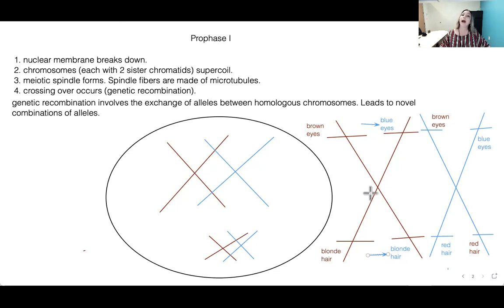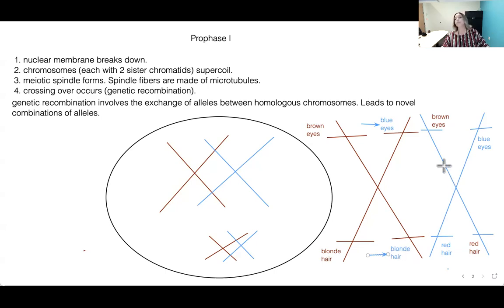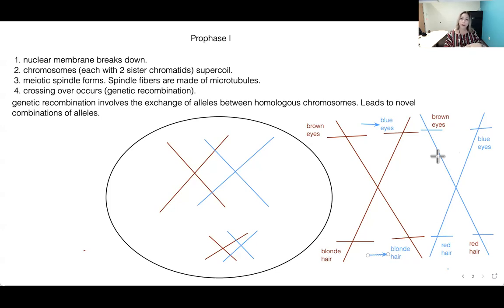So there are new allele combinations: blue eyes with blonde hair is new; brown eyes with red hair is new. Mom's original chromosome had brown eyes and blonde hair; dad's had blue eyes and red hair. But now we have chromosomes with blue eyes and blonde hair, or brown eyes and red hair — combinations that didn't exist before. Crossing over requires homologous chromosomes.